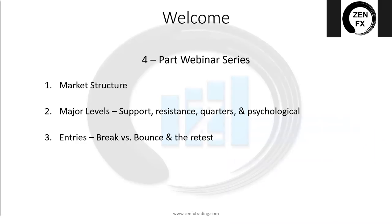Our last webinar is going to cover something that's not covered until week two of the APAC course — the advanced price action course — and we're going to talk about trend lines. I'm going to show how 90% of traders out there are drawing their trend lines incorrectly. There's a specific way that will allow you to get more accurate results from trend lines. It's a very easy fix — depending on where you learned basic price action, you might just be doing it slightly wrong.